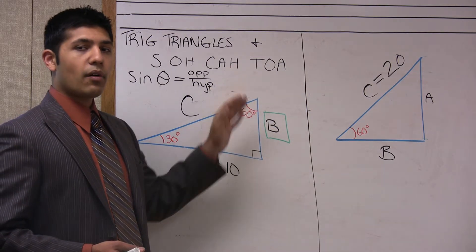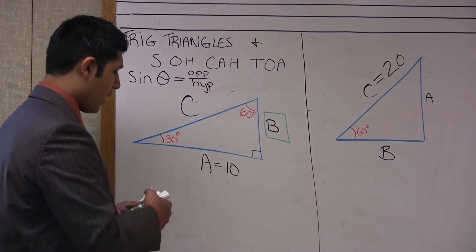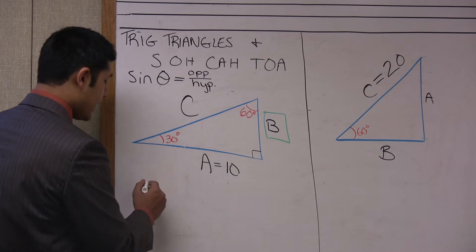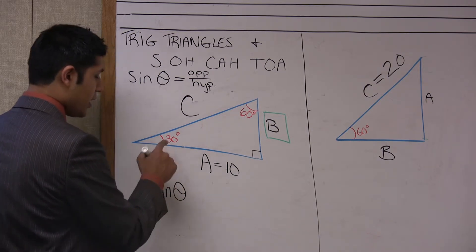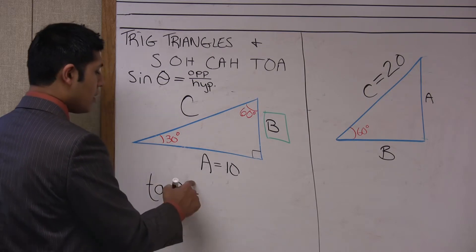So I can write the tangent of theta, which is 30 degrees, is equal to B over A.